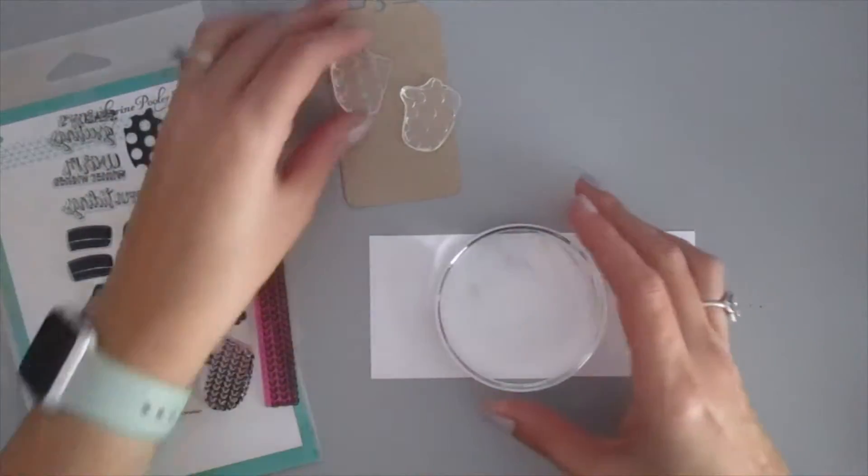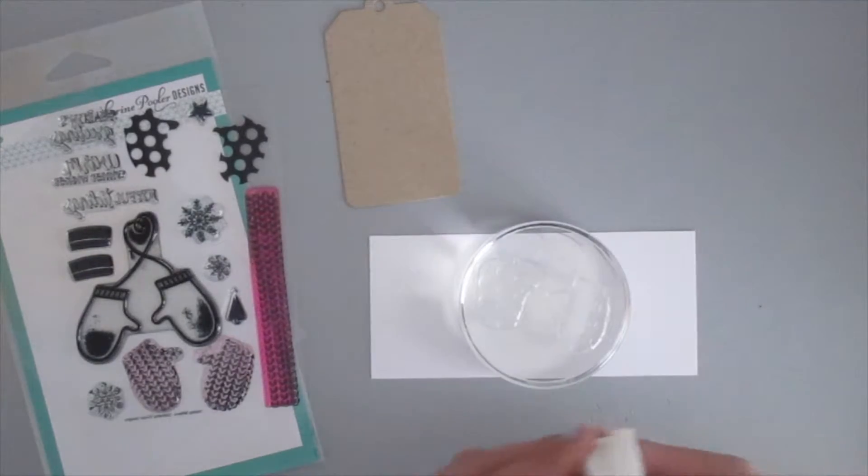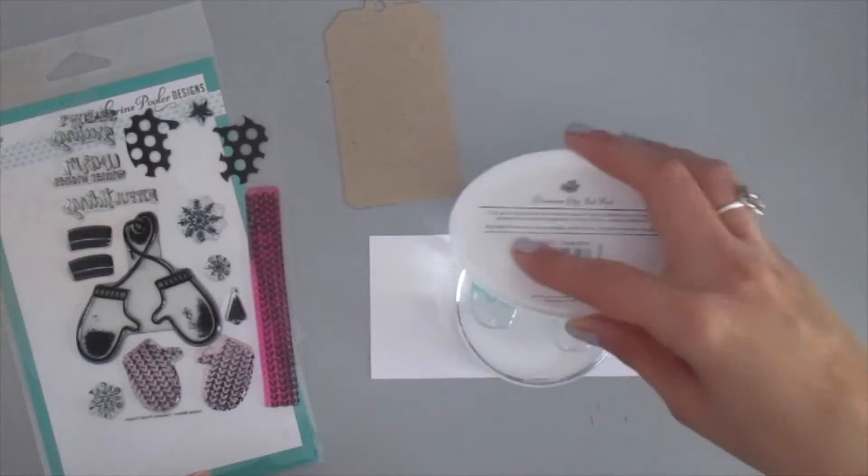Now the die, there's one that coordinates with the mittens that are attached and then the two that are separate along with the snowflakes and the Christmas tree. There's all kinds of goodies in that coordinating set.